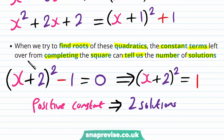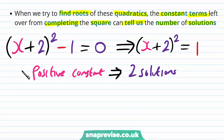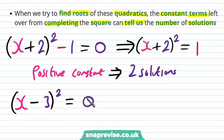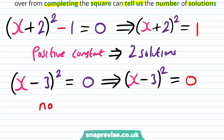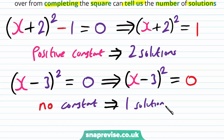For our next equation, x minus 3 all squared equals zero. This requires no rearranging; we still have x minus 3 all squared equal to zero. Here we have no constant on the right-hand side, i.e. zero. By square rooting, we'll only get one solution, because we'll have x minus 3 equals zero. Plus or minus zero is still zero.